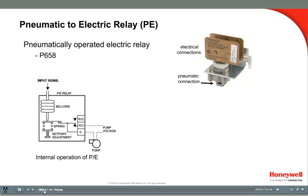Another useful electric interface is the pneumatic-to-electric relay, commonly referred to as a PE relay. Inside, it has a bellows that is operated by a pneumatic pressure signal. The bellows moves to make or break electric contacts. PE relays are used to control electric devices using pneumatic control logic. The relay has an adjustable set point and can be set to make or break contacts at any desired pressure. They can be used for on-off control of fans and pumps, energizing electric heaters, day-night control of unitary equipment, interlock functions, and control of other electrical equipment in mechanical systems.